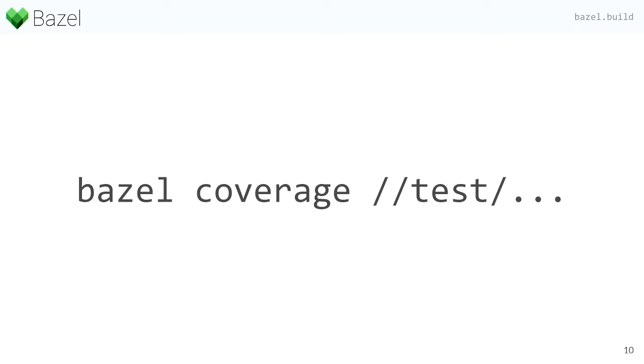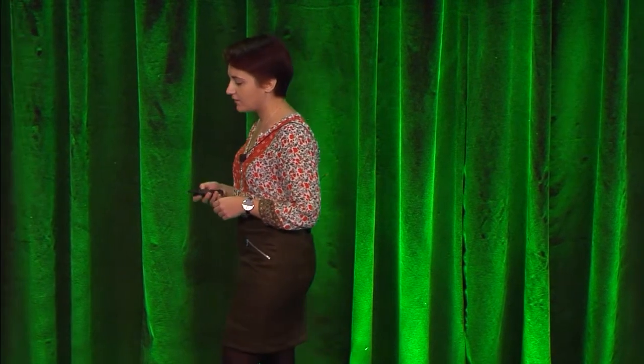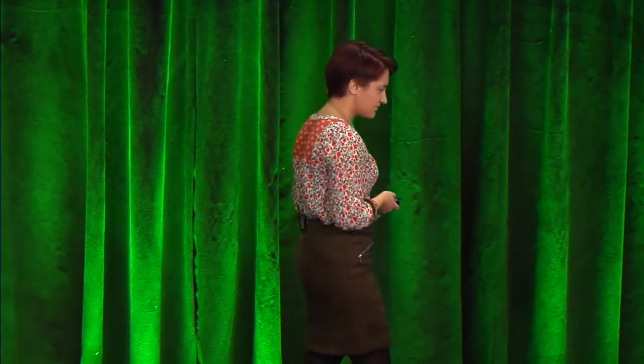However, as some of you already know, we weren't very successful when we decided to open source it — there were some problems. For Java coverage, it only worked with one worker, so you couldn't use the parallelism in Bazel. For C++, it was even worse because it was buggy. Bazel would randomly crash. You would get either incomplete or incorrect coverage reports. It was very slow and had some other issues.